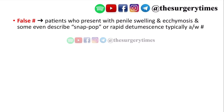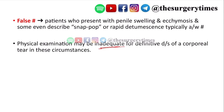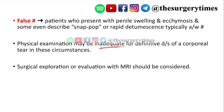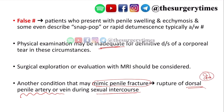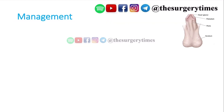A 'false fracture' refers to a presentation with penile swelling, ecchymosis, and sometimes a snap/pop sound or rapid detumescence — mimicking true fracture — but without actual tunical disruption. Physical examination may be inadequate for definitive diagnosis in these cases; surgical evaluation or MRI should be considered. Another mimic is rupture of the dorsal penile artery or vein during sexual intercourse — but true penile fracture is defined only by tunica albuginea or corpora cavernosa tear.